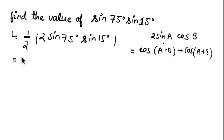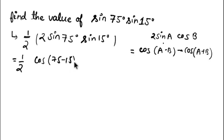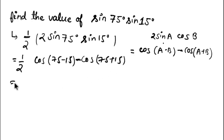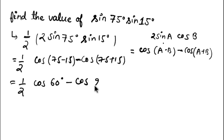We write one-half as it is, and applying the formula to 2 sine 75 into cos 15, we get: cos(75 minus 15) minus cos(75 plus 15). Solving further, we get one-half times cos 60° minus cos 90°.